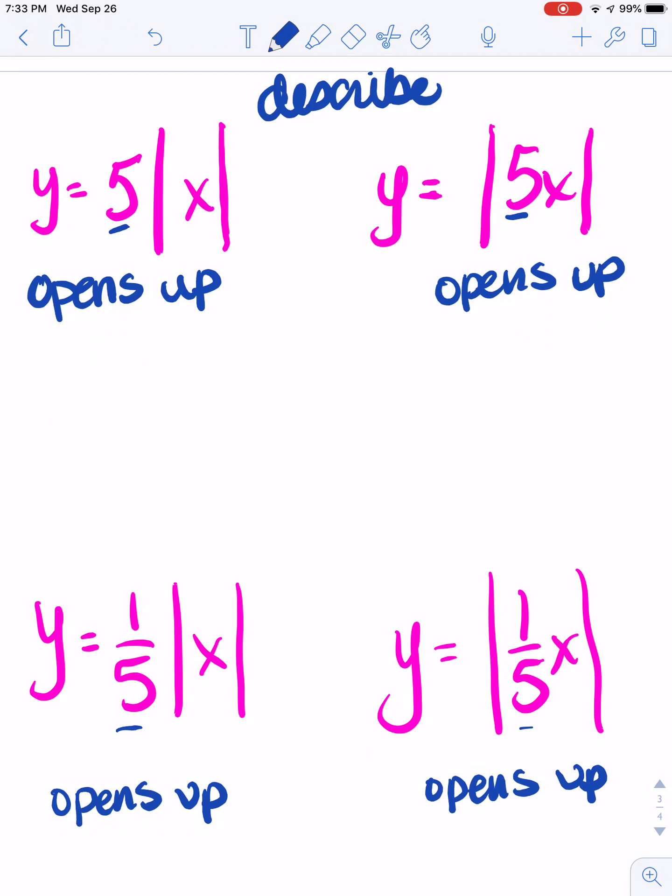If I had a negative that was out here with the 5, then that would be one that would open down. So that's kind of what we're talking about.